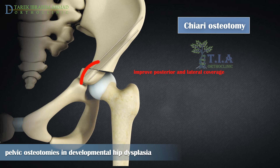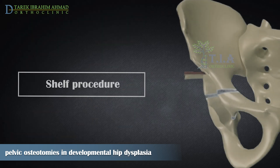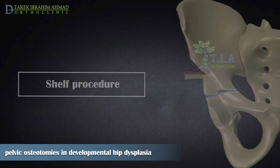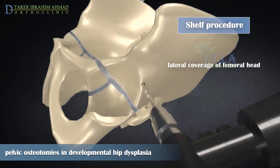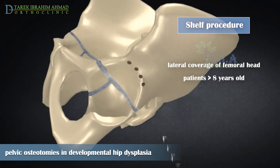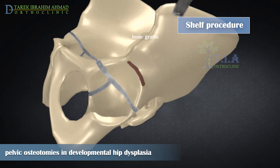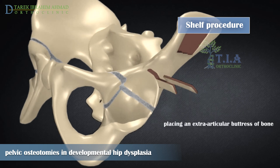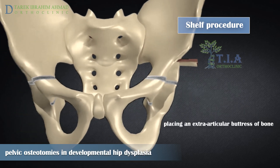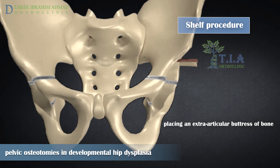The shelf procedure is a salvage procedure performed in patients greater than eight years old with acetabular dysplasia when concentric reduction is not possible. Iliac crest bone grafts are placed into the lateral portion of the ilium at the acetabular margin. It improves support of the femoral head by widening the roof of the acetabulum over the joint capsule and thus prevents subluxation.